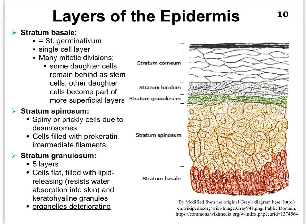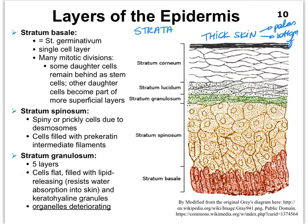The sub-layers of the epidermis are referred to as strata, or singular stratum — strata is the plural form. When you see five strata in an epidermis, you can conclude that you're looking at thick skin. Only thick skin, such as the palms of your hand and the bottoms of your feet, has thick skin. All other parts of the body have what we call thin skin. Thin skin is made up of only four layers, and the layer not found in thin skin is the stratum lucidum — present only in thick skin.